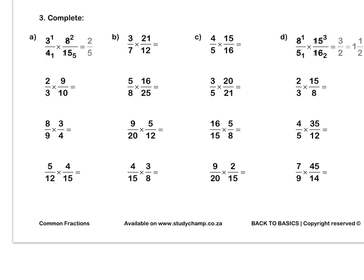Question 3. In this sum, we've divided 8 and 4 by 4, leaving 2 and 1. Then we can simplify 3 and 15 by dividing both by 3, giving 1 and 5. We multiply out to get two fifths.